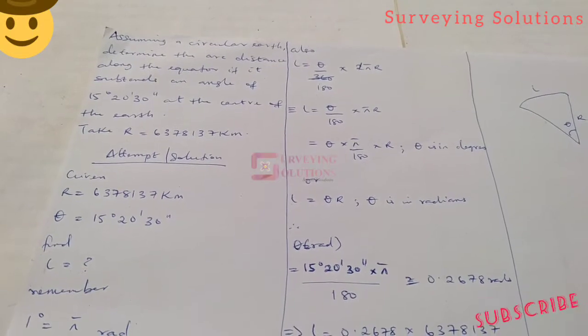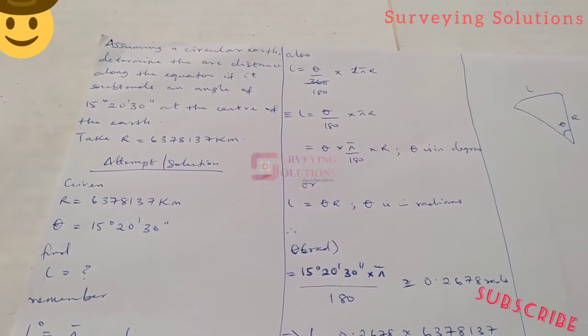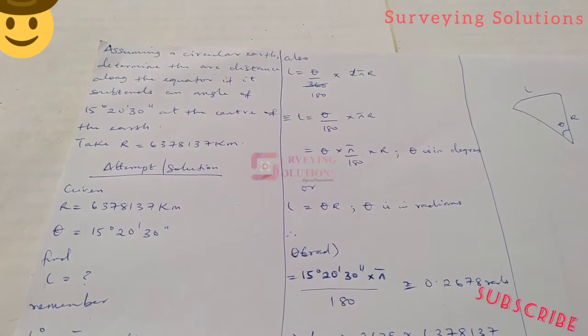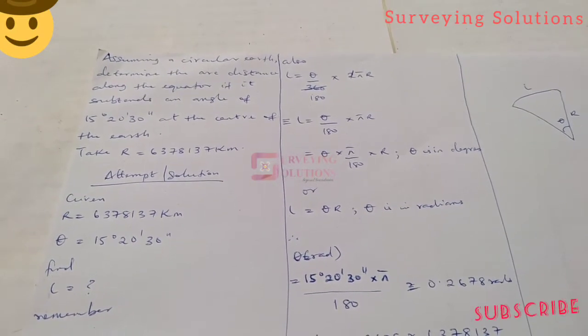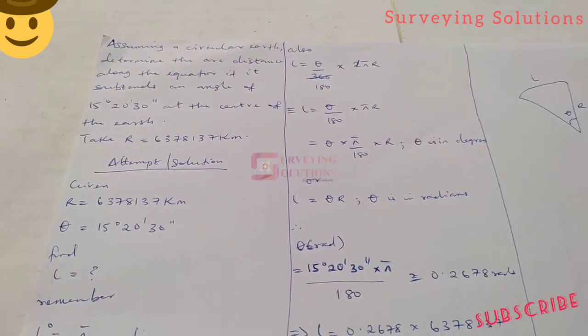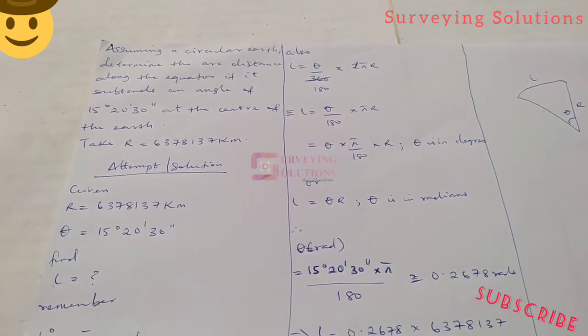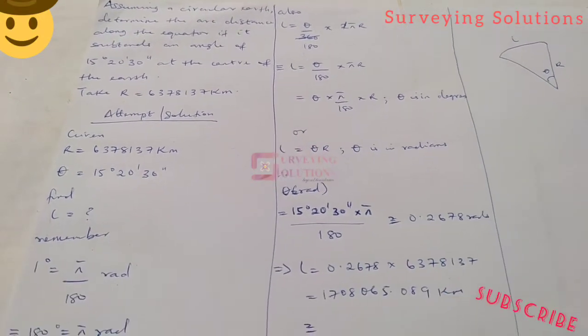Given in the question, we have the radius and the angles obtained, and we are to determine the arc length along the equator.